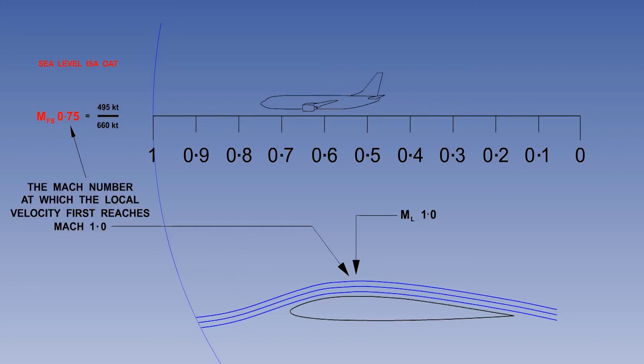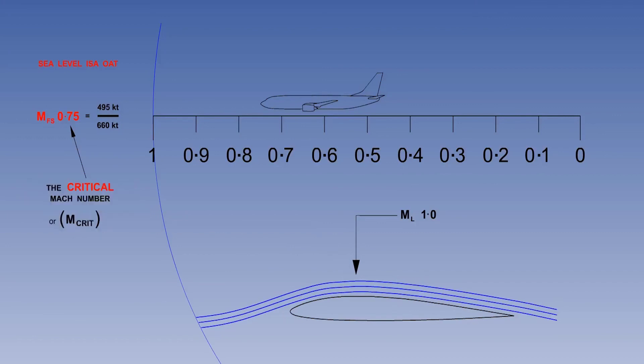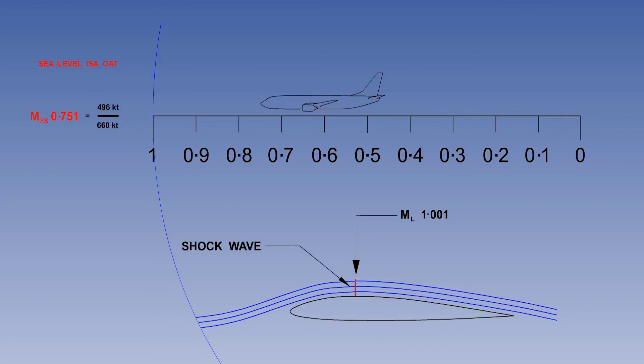The aircraft Mach number at which the local velocity first reaches Mach 1 is called the critical Mach number, usually shortened to mCrit. As soon as mCrit is exceeded by even the smallest margin, a shock wave will start to form at the point of maximum local velocity.